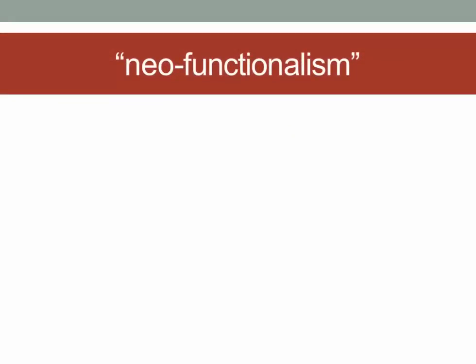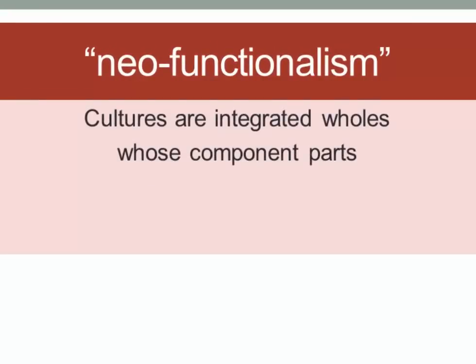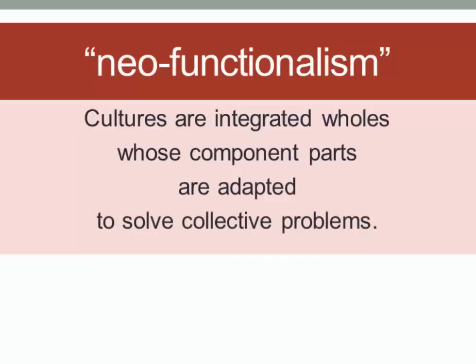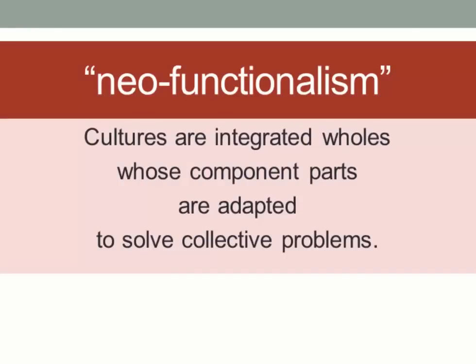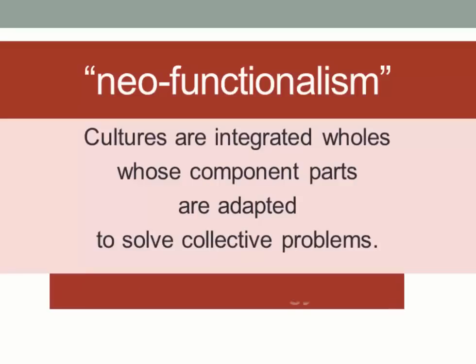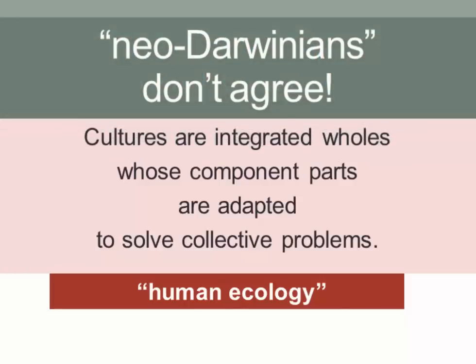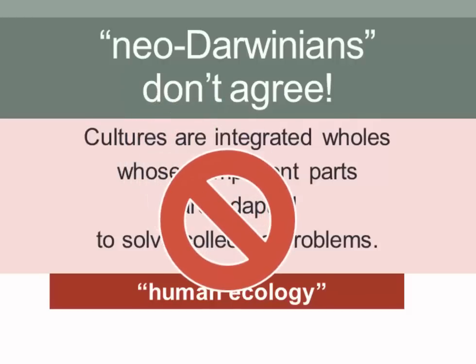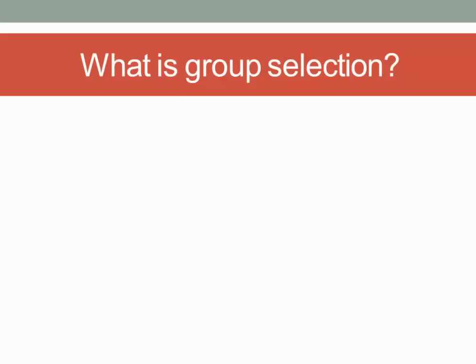In the 1960s, this approach was called neo-functionalism. Functionalism is the argument that cultures are best thought of as integrated wholes, and all parts of a culture work together to solve collective problems — analogous to how your heart, lungs, and nervous system function within your body. What was new in neo-functionalism is the argument that an adaptation was involved, presumably reflecting biological evolution. As you might expect, neo-Darwinians don't agree with this approach and argue that neo-functionalism is wrong-headed.